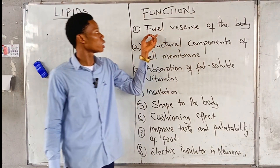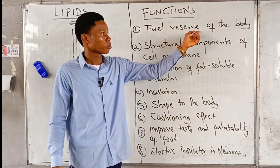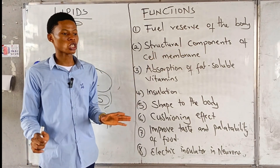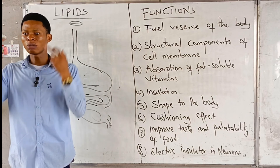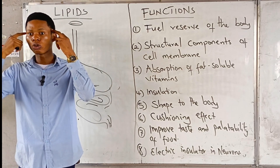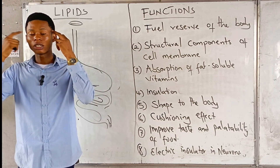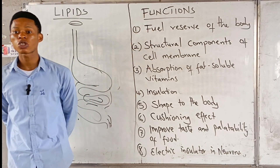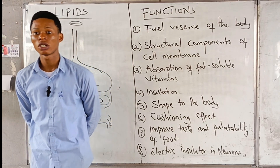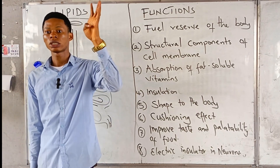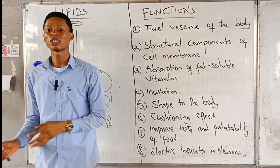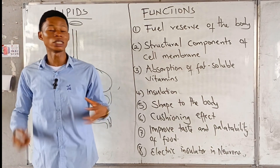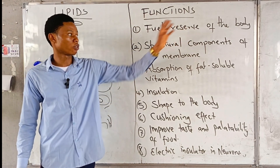Fats and lipids serve as a fuel reserve of the body — a storage form of energy. They don't serve as immediate use energy. The brain depends mainly on glucose. In fact, the brain cannot get energy from lipids. Some parts of the body, like the brain and erythrocytes — red blood cells — must get energy from glucose. But generally, lipids serve as a fuel reserve of the body.